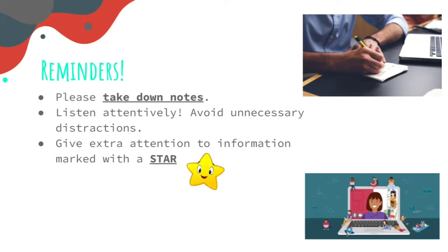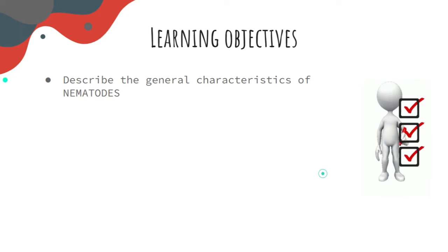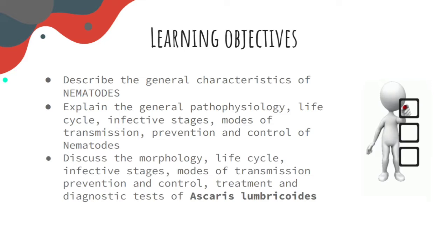Here are our learning objectives for today. Number 1, describe the general characteristics of nematodes. Number 2, explain the general pathophysiology, life cycle, infective stages, modes of transmission, prevention and control of the common nematodes. Third, discuss the morphology, life cycle, infective stages, mode of transmission, prevention and control, treatment and diagnostic test for Ascaris lumbricoides.